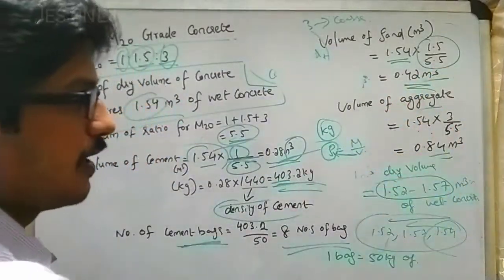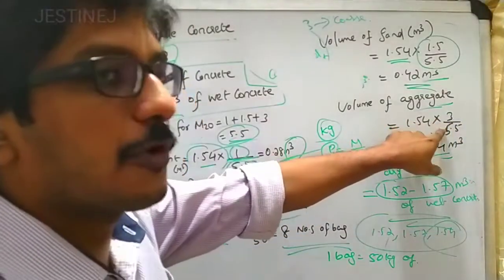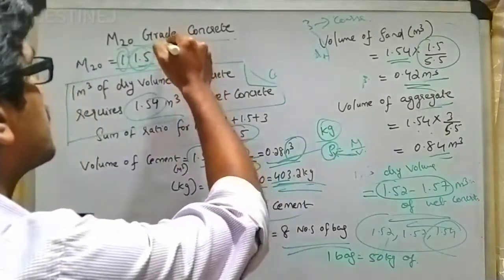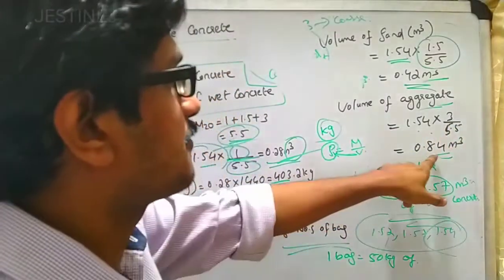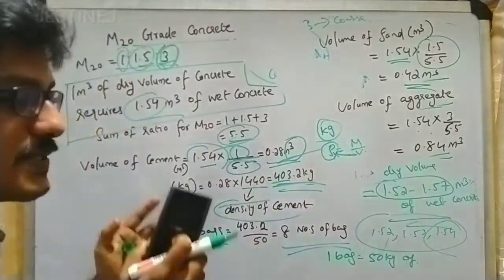The volume of aggregate is 1.54 multiplied by 3 divided by 5.5, and finally you will get the value as 0.84 cubic meters.